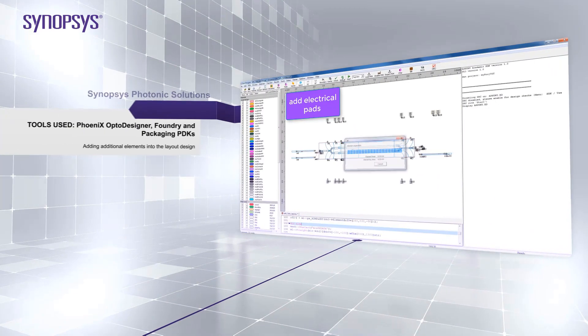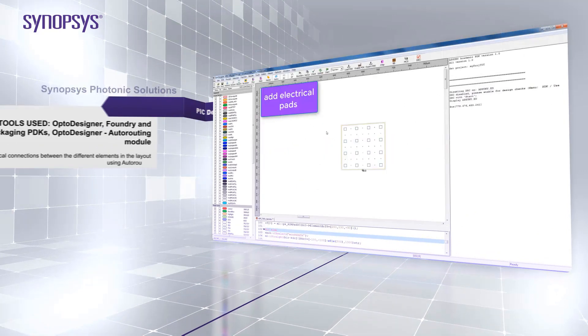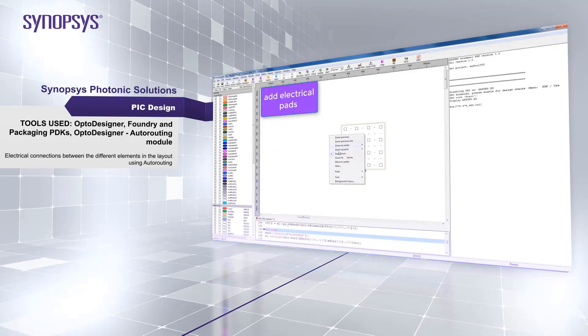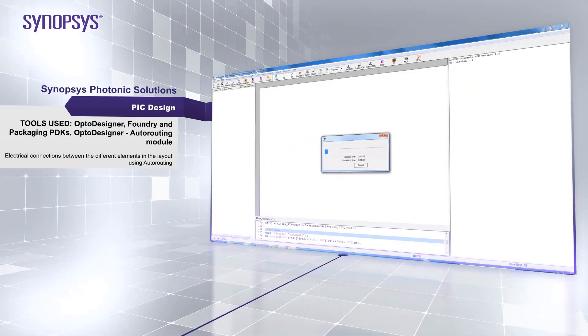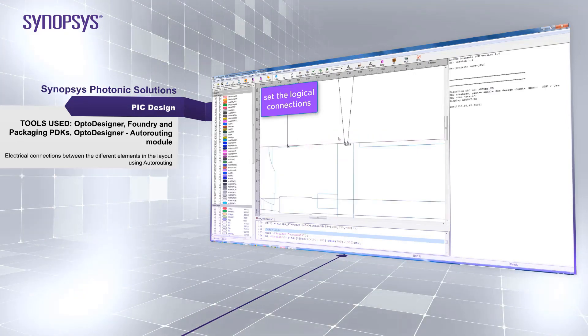Once the DC pads are added into the design layout, you can use OptoDesigner auto-routing module to complete your layout. The auto-routing functionality works for both electrical and optical connections. You can use the functionality to complete the connections between the electrical ports of the MZM and the DC pads.